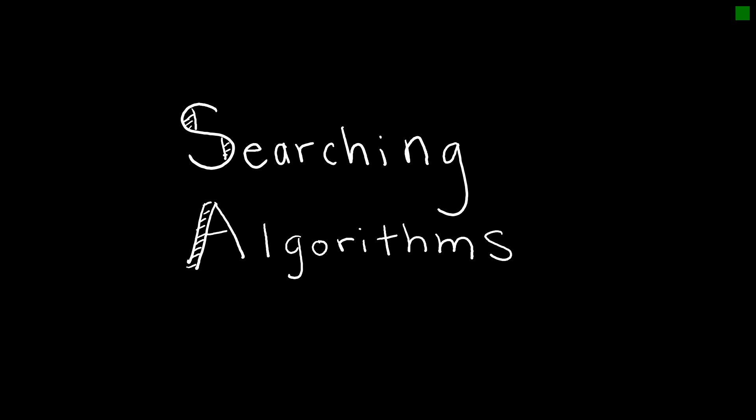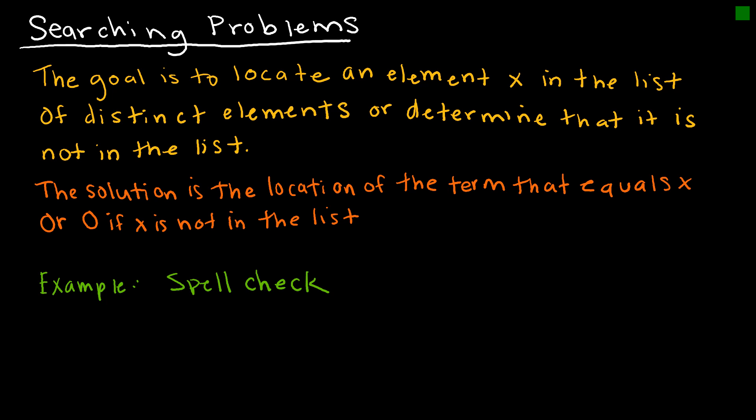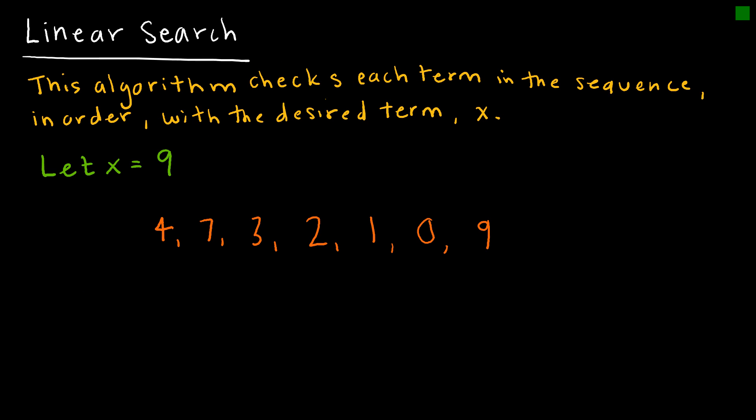In this video we are going to look at searching algorithms. A searching problem requires a searching algorithm to locate an element X in a list of distinct elements, or determine that it is not on the list. The solution is the location of the term that equals the value we're looking for, or zero if it is not on the list. An example is spell check, which looks through all your items, compares them to the dictionary, and outputs a squiggly red line under something not spelled correctly, or does nothing if everything is spelled correctly.